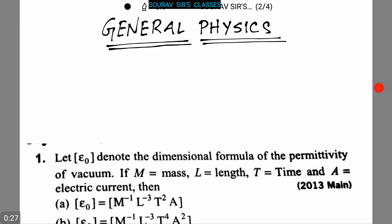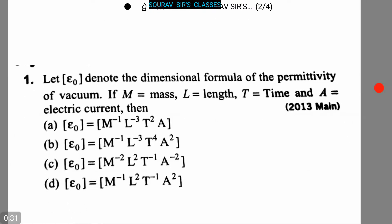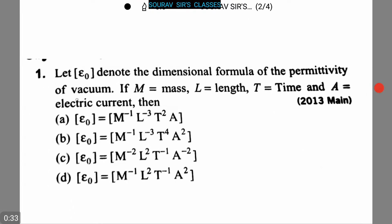Today we're going to solve some questions on general physics, and these questions are very important. Our first question is: let E0 denote the dimensional formula of permittivity of vacuum. If M is mass, L is length, T is time, and A is electric current, then which of the following options is correct?